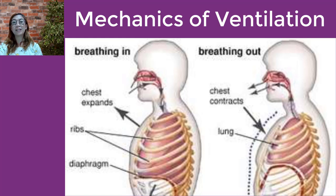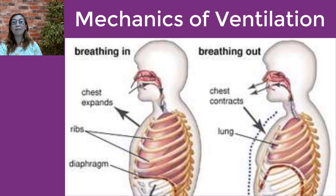Muscular breathing movements and recoil of elastic tissues create the changes in pressure that result in ventilation. Pulmonary ventilation involves three different pressures: the first is the atmospheric pressure, the second is the intra-alveolar pressure or intra-pulmonary pressure, and the third is the intra-pleural pressure. Atmospheric pressure is the pressure of the air outside the body. Intra-alveolar pressure is the pressure inside the alveoli of the lungs. Intra-pleural pressure is the pressure within the pleural cavity, and these three pressures are responsible for pulmonary ventilation.